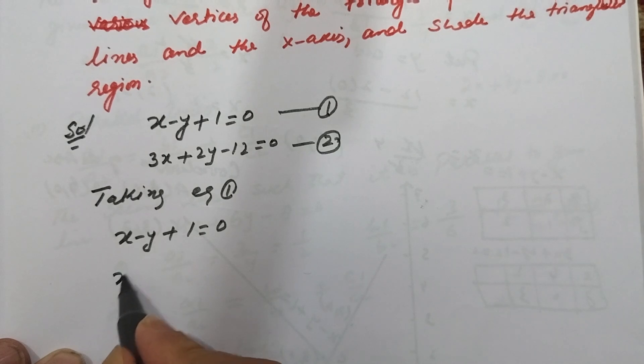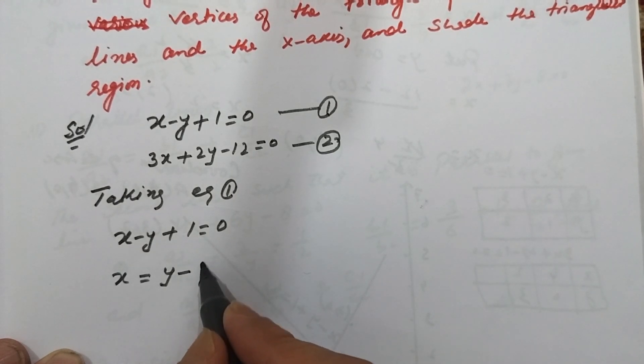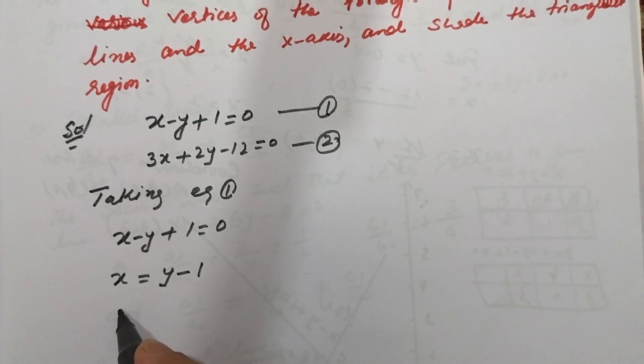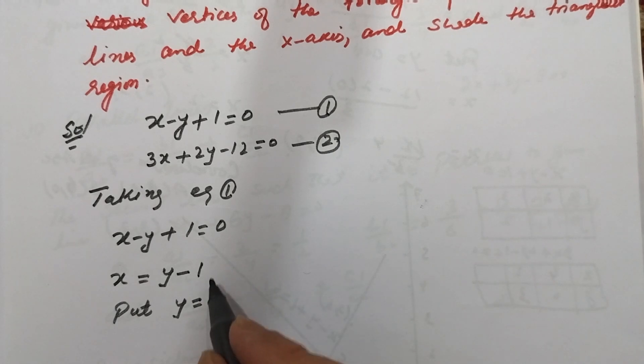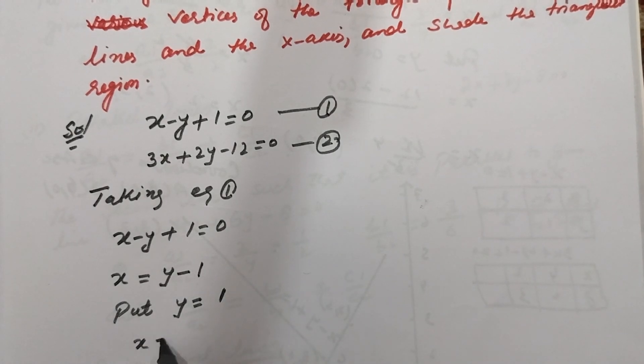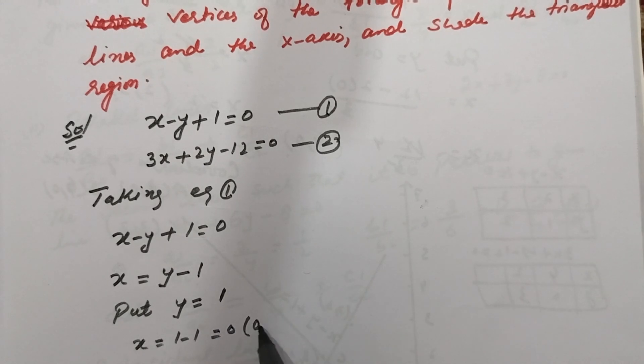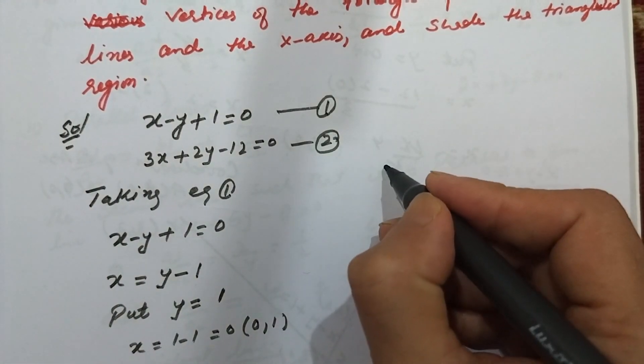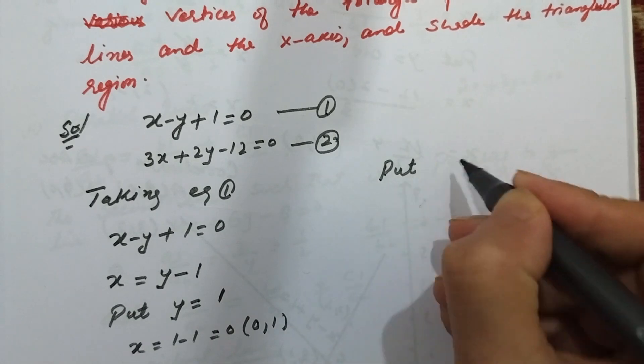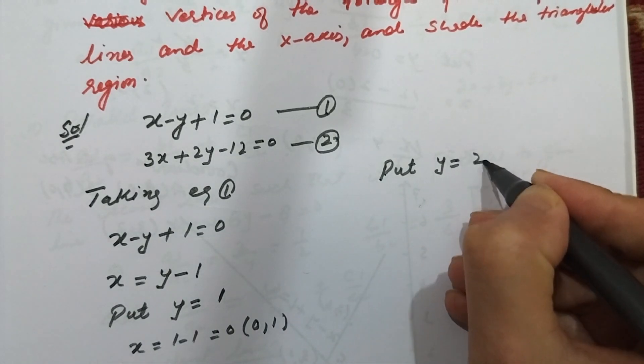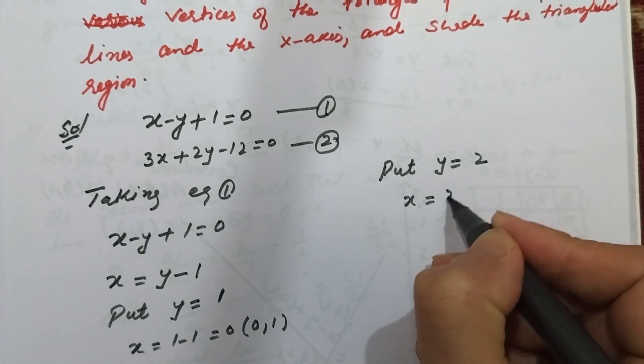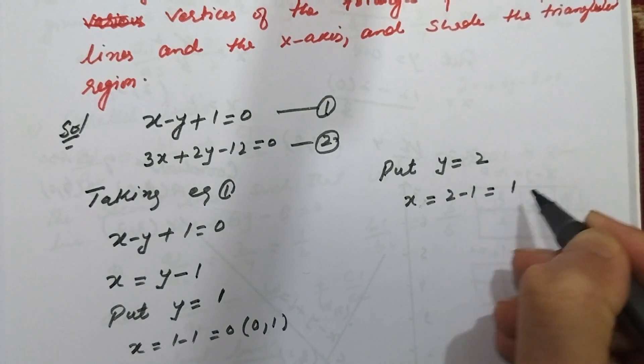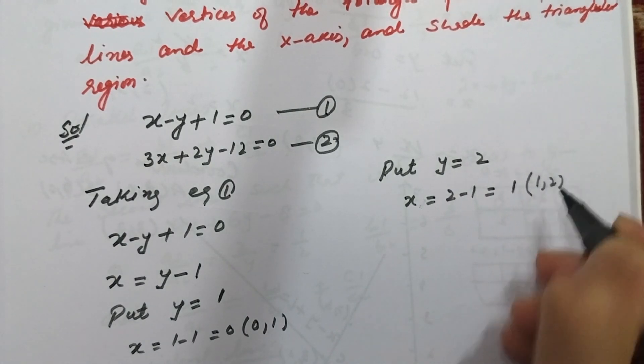We take x equal to y minus 1. Put y equal to 1. X will be 1 minus 1 equal to 0, so the first point is 0 comma 1. Put y equal to 2. X will be 2 minus 1 equal to 1, giving us 1 comma 2.